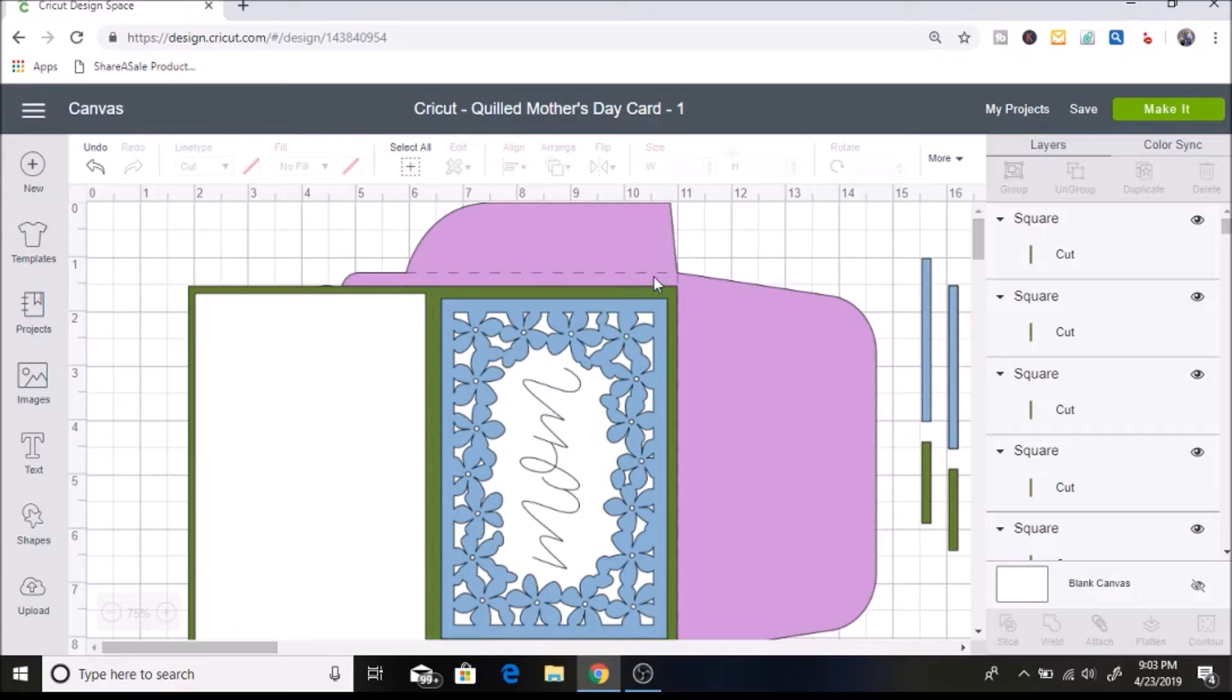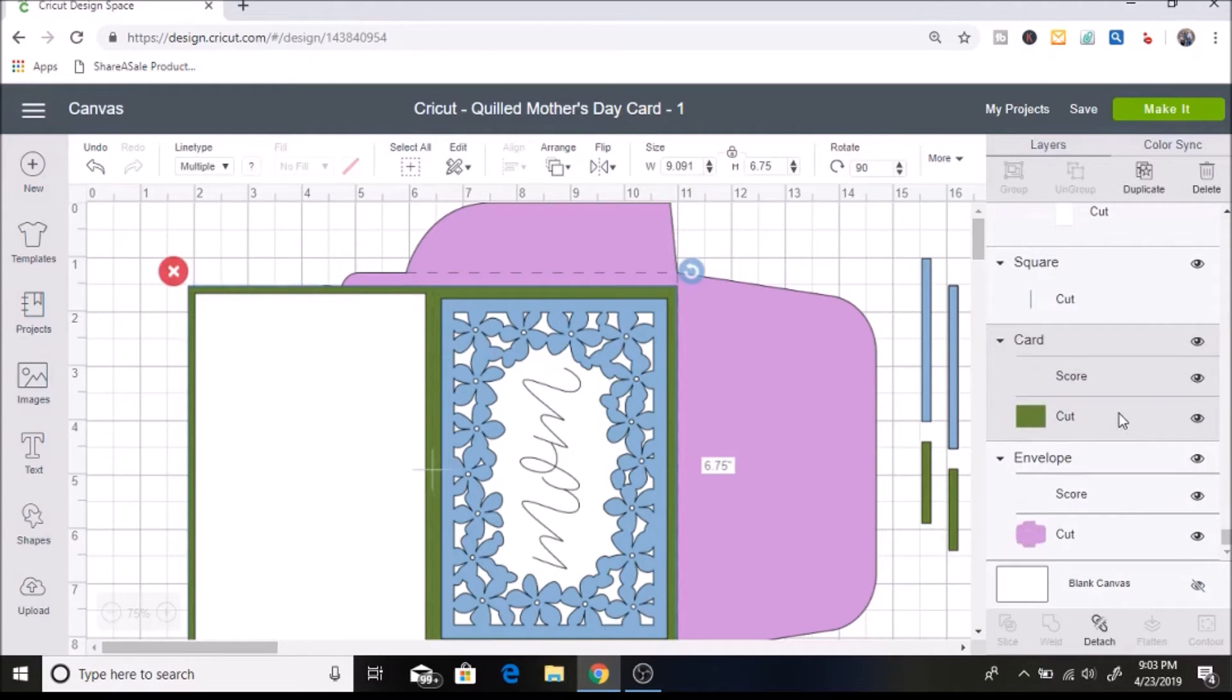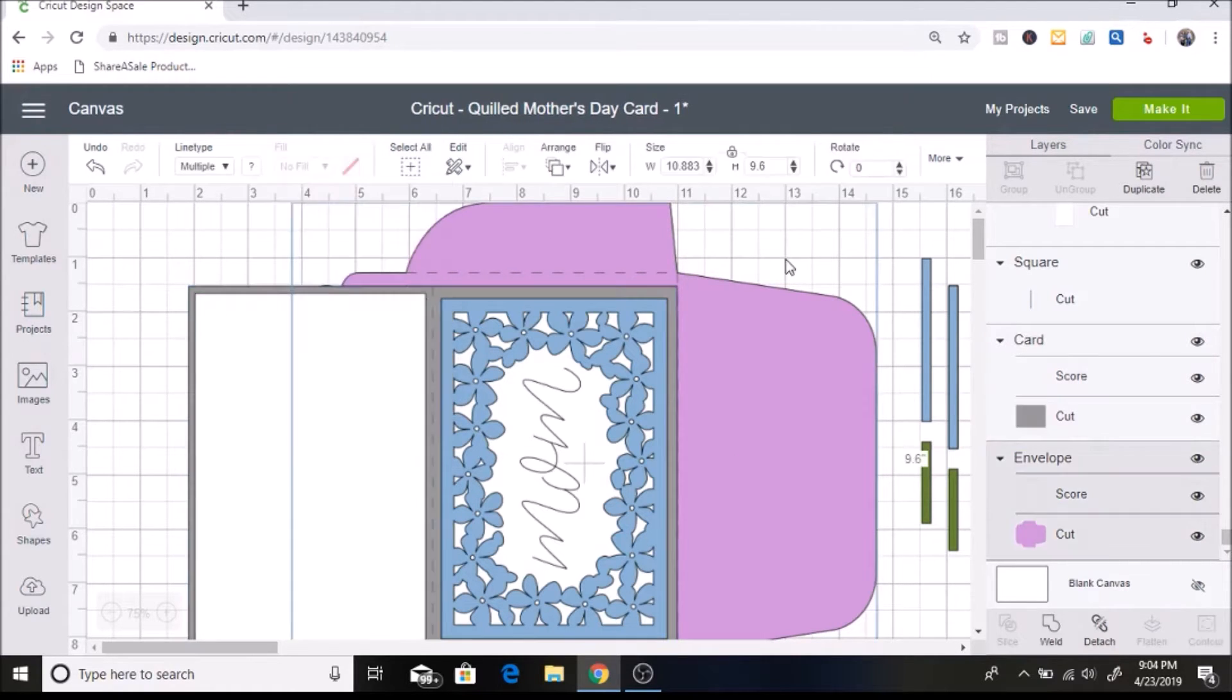Actually looking at this, this part that I have green I actually want it to be this pattern background. And since these are green it's going to put it on the same mat and I want it on a different mat. So I am going to change this green color to just a random different color. We'll just do a gray. So now I'm going to show you how this all looks on the mat. So I'm going to click on make it.